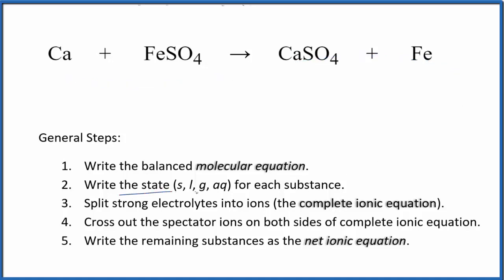Next, we can write the state for each substance. Calcium, that's a metal, so just calcium by itself, that'll be solid. Sulfates, in general, are soluble. This iron 2 sulfate, that's going to be soluble. We'll put AQ for aqueous.